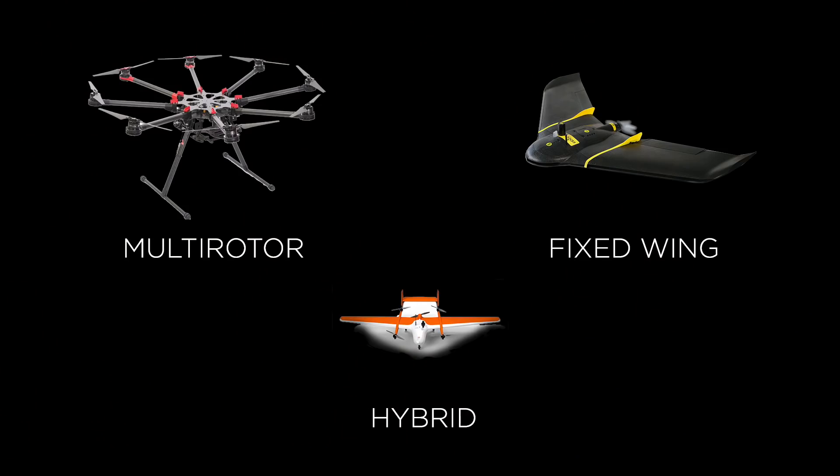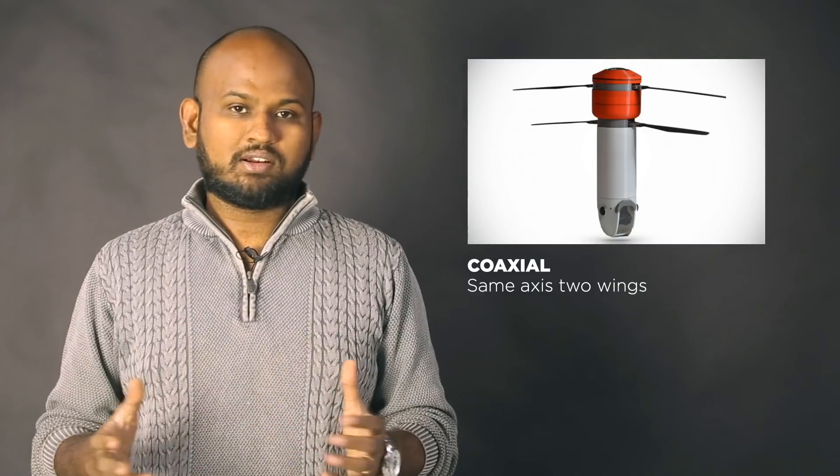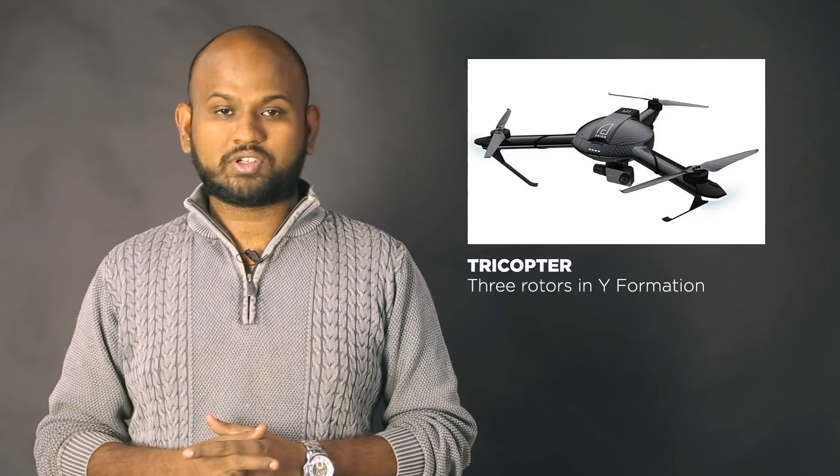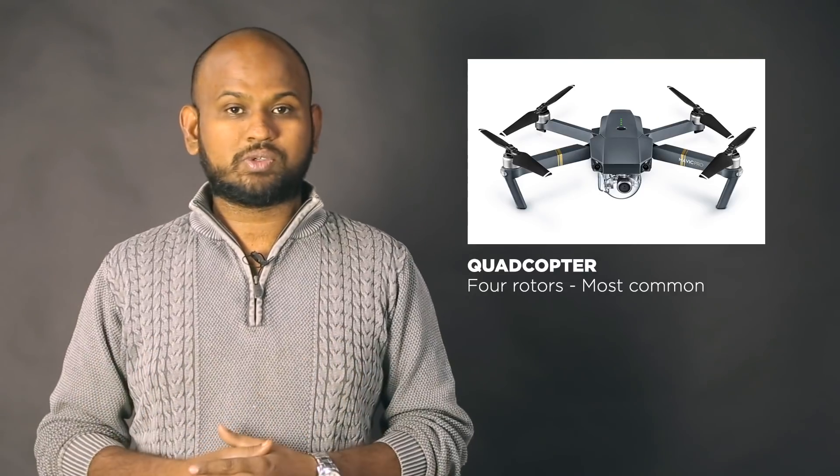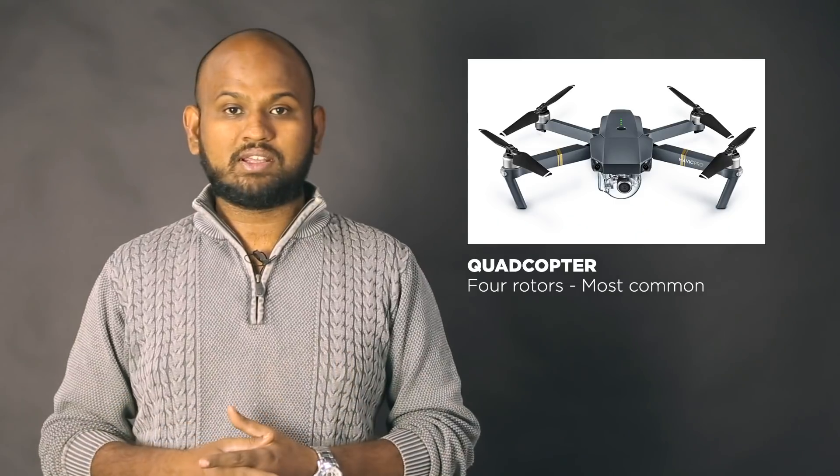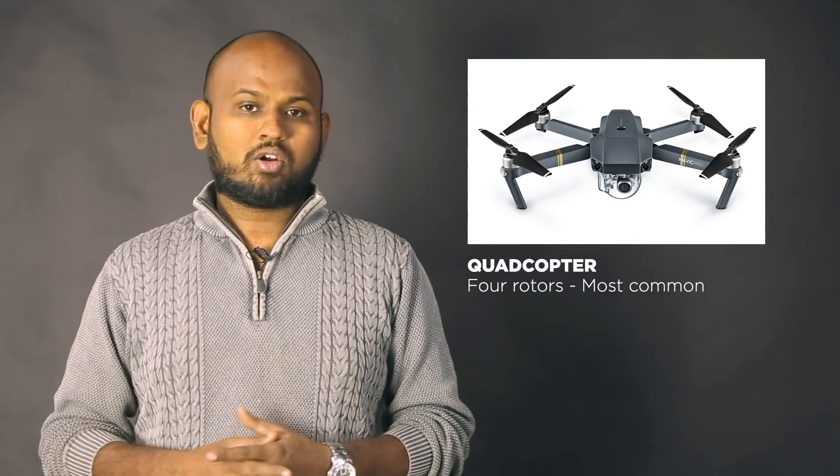There are three main types multi rotor, fixed wing and hybrid. Multi rotors, they have multiple rotors attached to them obviously. Coaxial, rotors on single axis. Tri copters, three rotors in a Y formation. Quad copters, four rotors which is the most commonly used ones. The DJI Phantom or the Mavic series that you most commonly see are all quad copters.